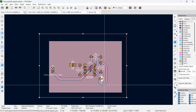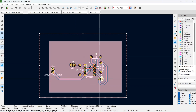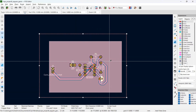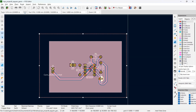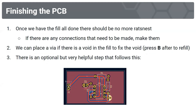Once the PCB is finished and the fill is done, there should be no more rat's nest lines. If any connections still need to be made, make sure you make them. You can place a via if there's a void to fix, then press B again to refill.